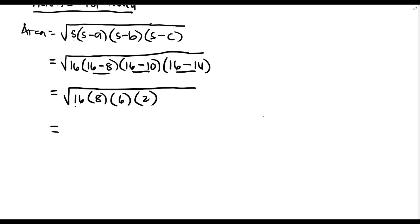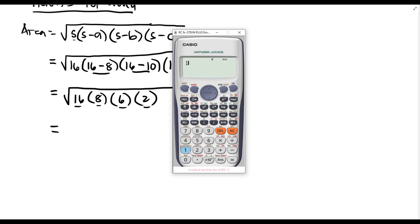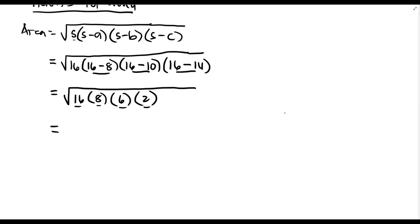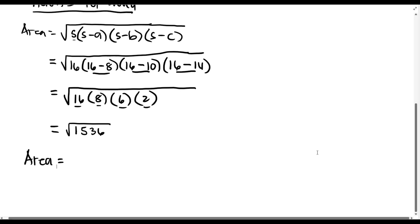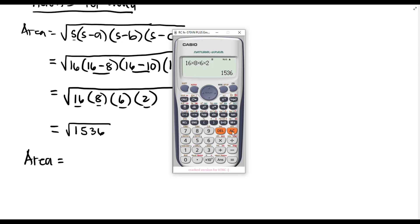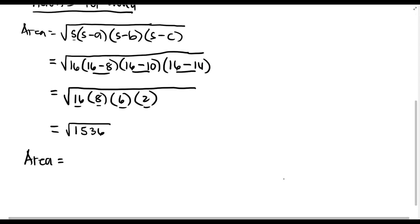Simplifying: 16 times 8 times 6 times 2 equals 1536. So the area equals the square root of 1536, which is approximately 39.19.